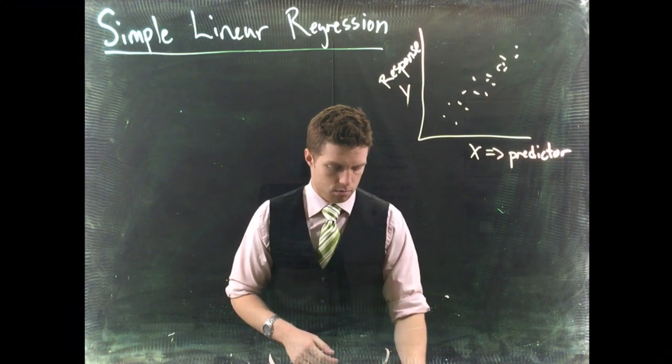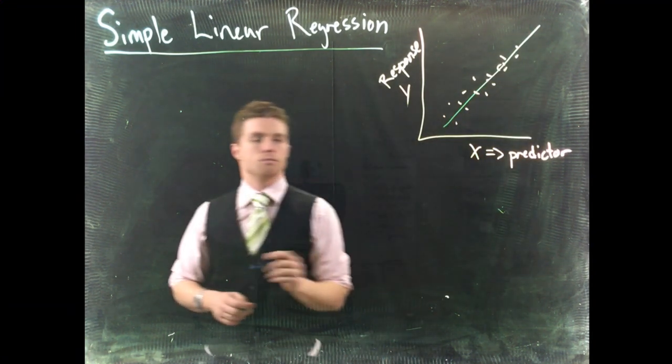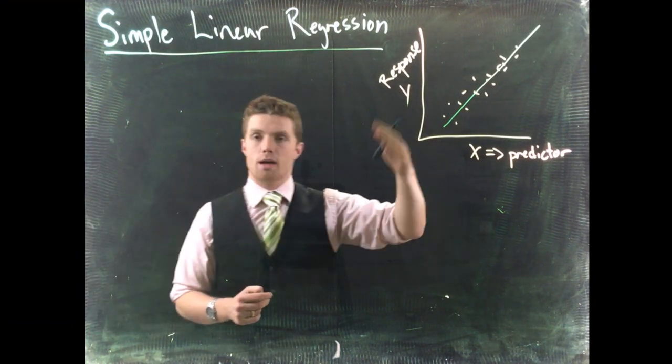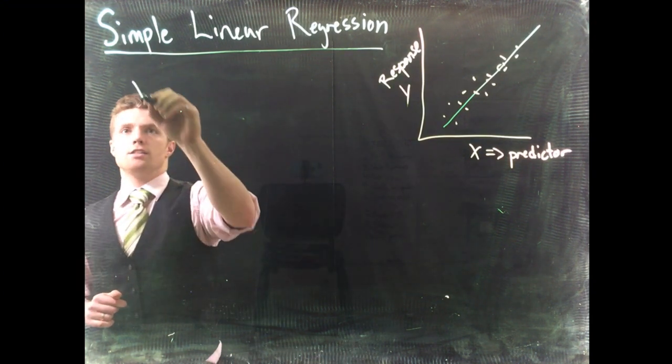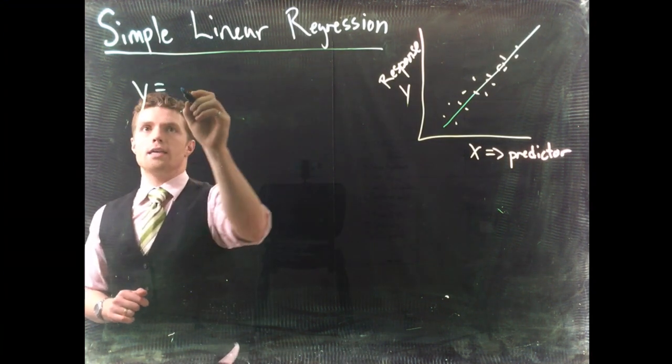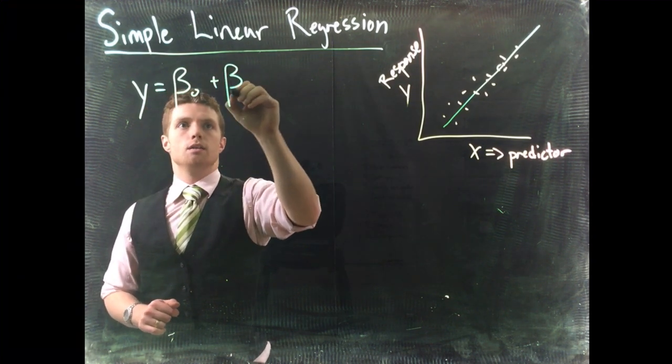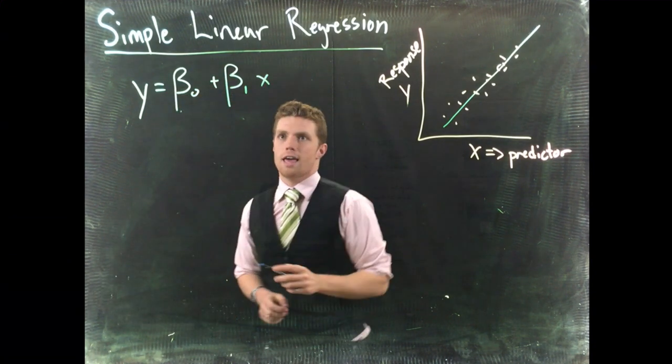So ultimately, we are trying to fit some line. And our equation for that line, if we were to gather all possible data points in our population and we plotted them, the line of best fit would look something like this: y equals beta naught plus beta 1 multiplied by x.